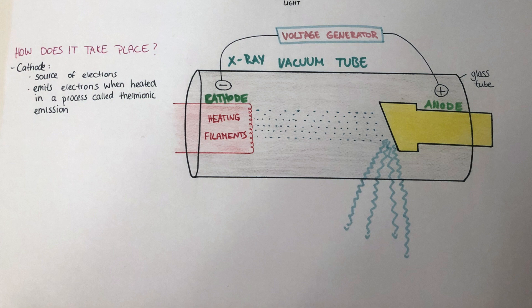Within the tube, the electrons need to be accelerated, and the way this happens is by increasing the voltage difference between the cathode and the anode. When this is done, the electrons will travel towards the positively charged anode and then collide with it, releasing this excess energy in the form of heat and x-rays.